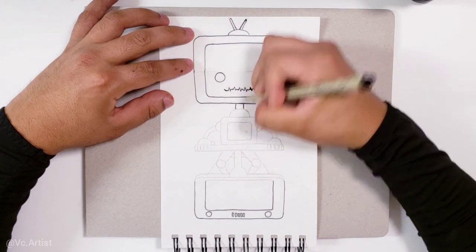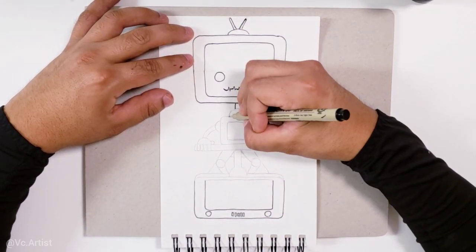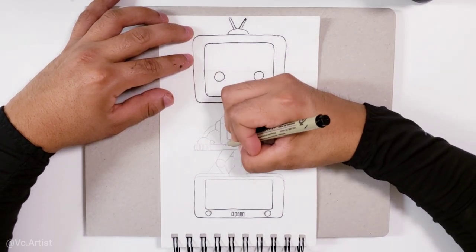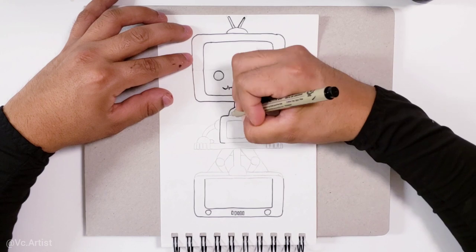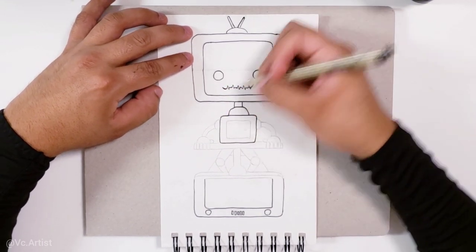We're gonna draw the neck, and also you wanna make sure that you keep with the line in the middle that we drew in the beginning, to make sure that everything is equal sided on the left and on the right, so it basically looks even.